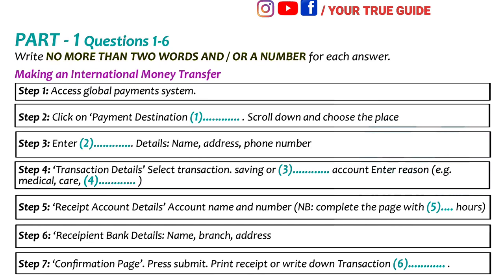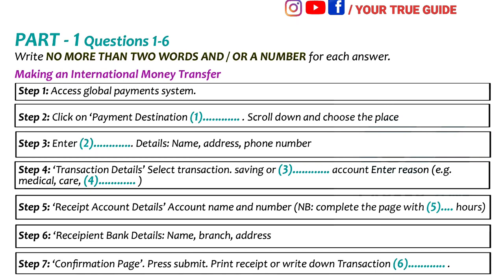Once you've done that, select International Money Transfer. I don't see it… It's the first option, under the heading of International Services. I've found it. Now, click on Payment Destination Country and scroll down to the location you wish to send money to. It's all in alphabetical order.